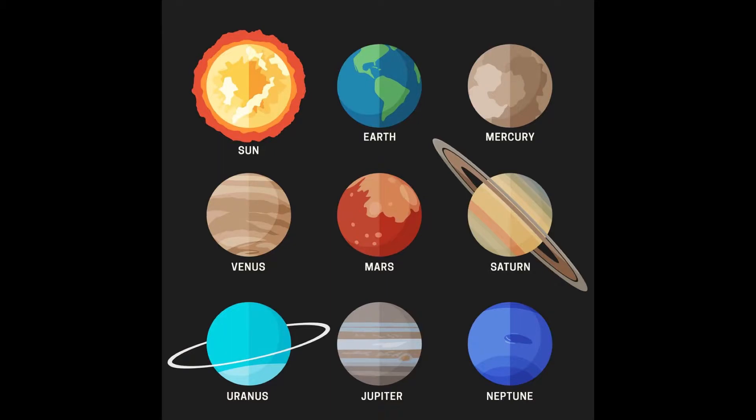Saturn, Uranus, and Neptune are the coldest planets. Neptune is also the farthest planet from the Sun.